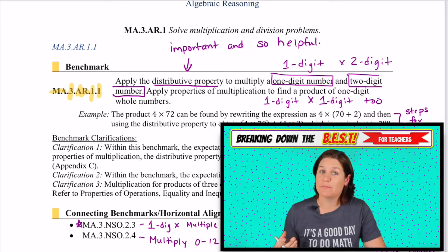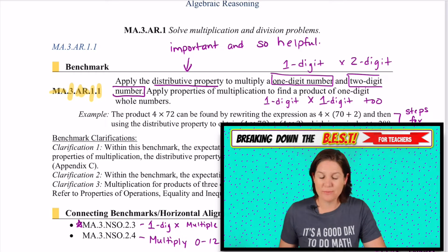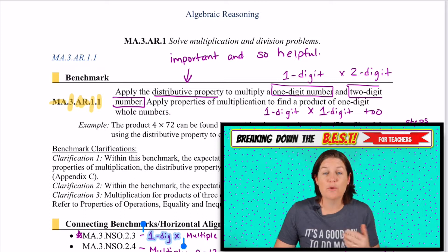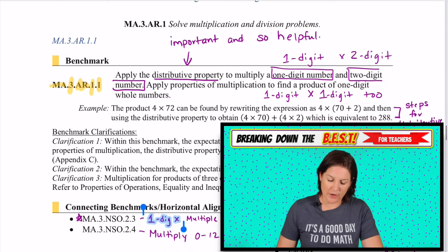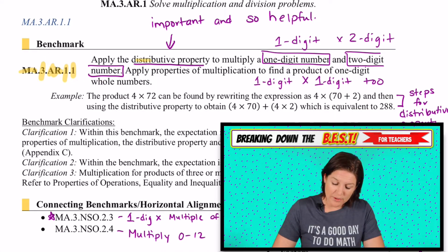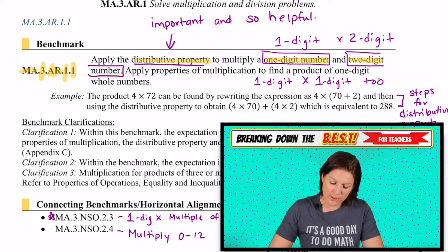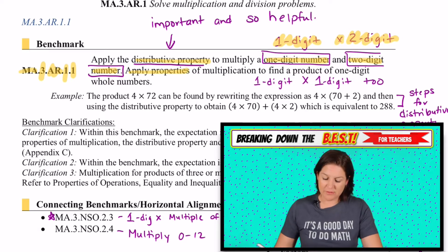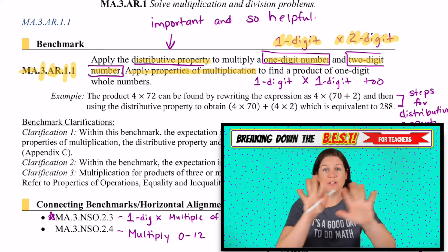MA stands for mathematics, 3 for third grade, AR for algebraic reasoning, which is so fancy. That first one means that we're going to be focusing on multiplication and division problems for the first standard today. It says that we are going to apply the distributive property to multiply one-digit numbers and two-digit numbers. So that means a one-digit number times a two-digit number.